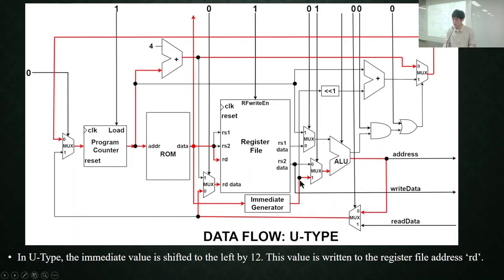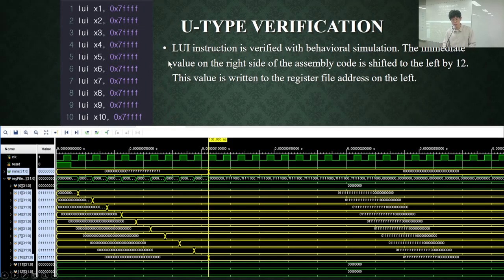This shows the data flow of U-type instruction. The immediate value is shifted to the left by 12, and this value is written back to the register file. This shows the verification result of LUI instruction.